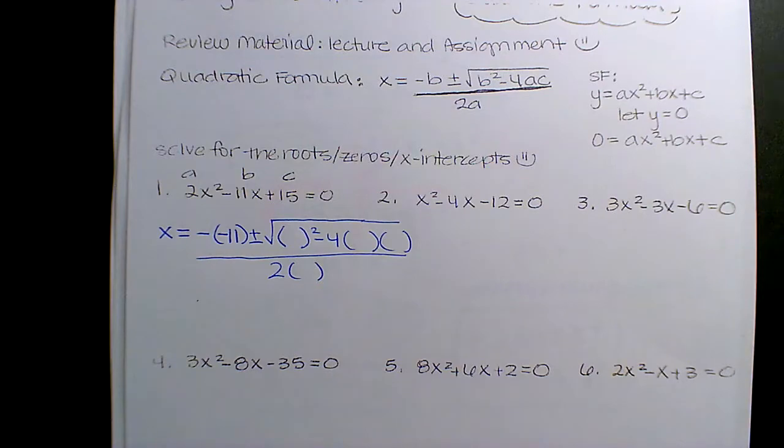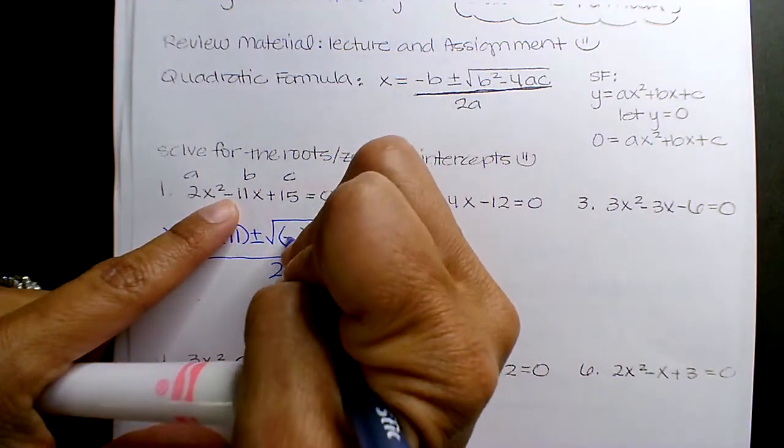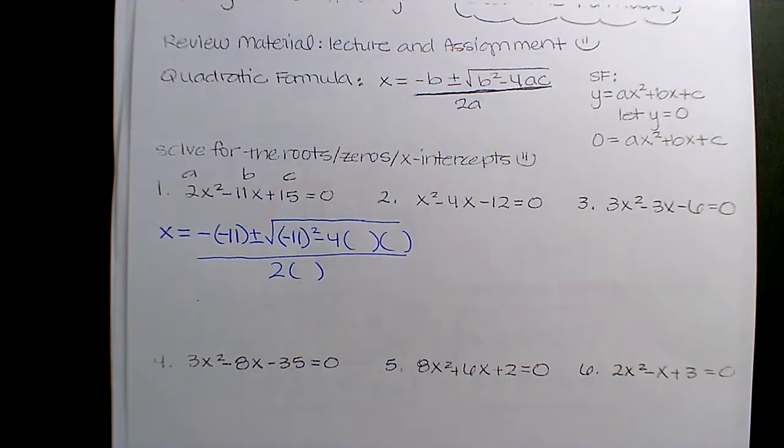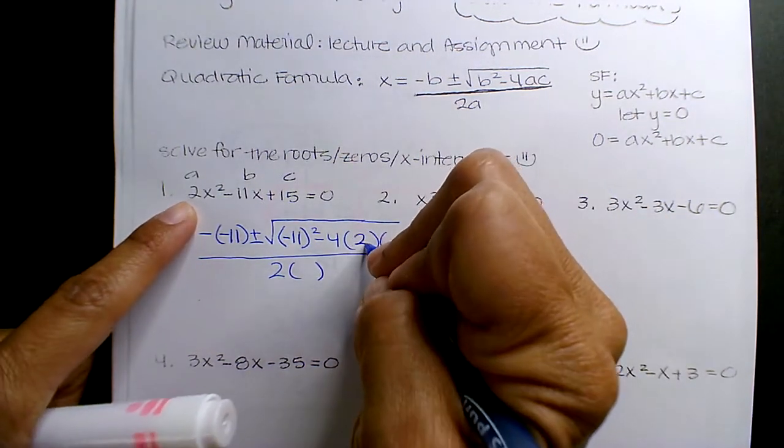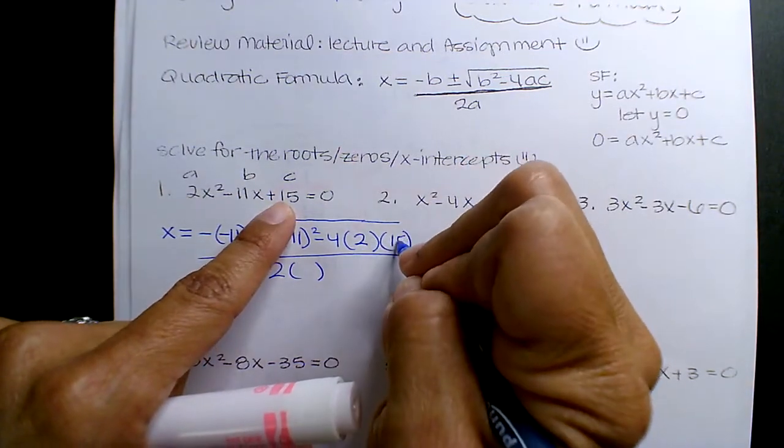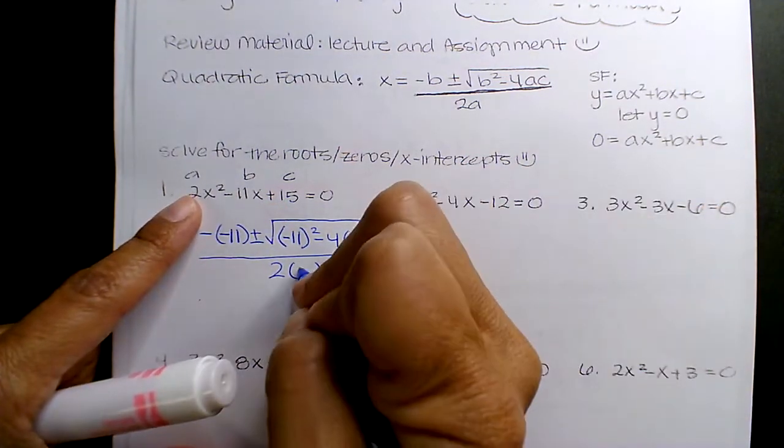Okay, plus or minus square root, B squared, negative 11. A is 2, C is 15, A is 2.